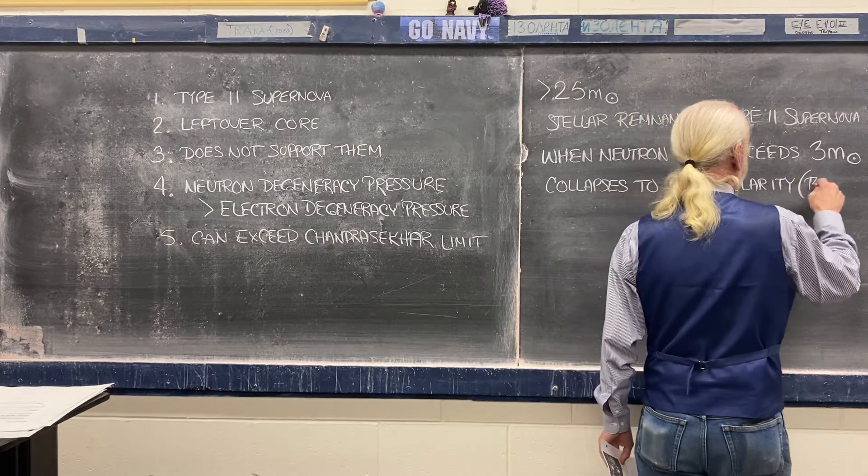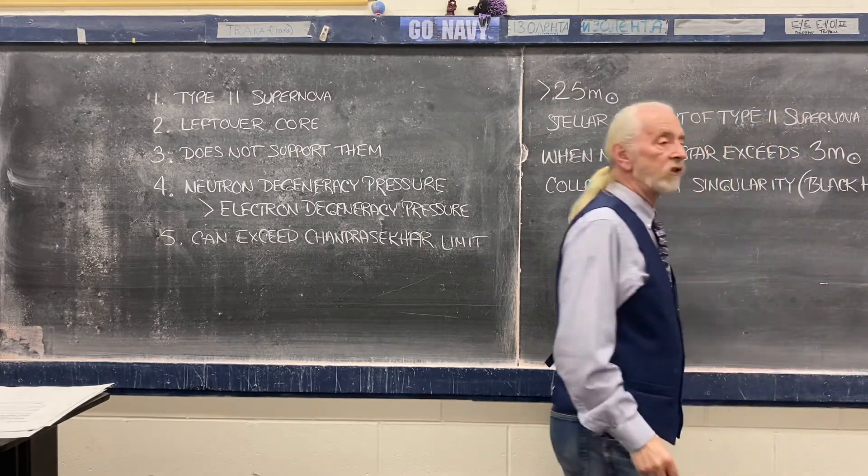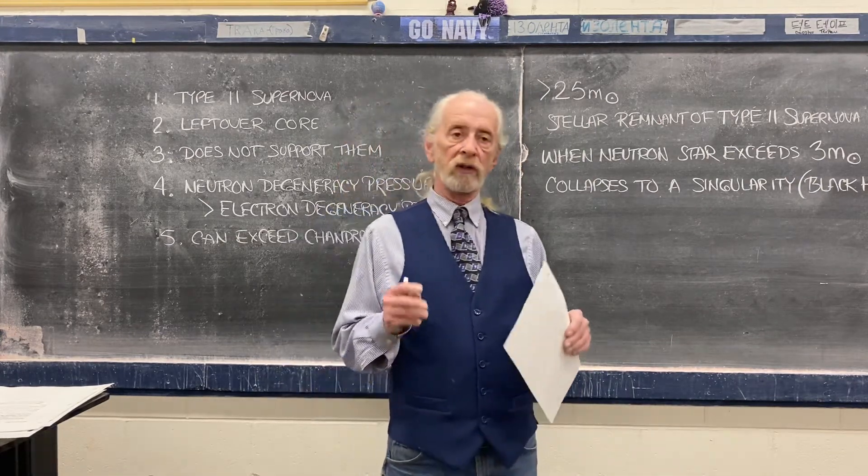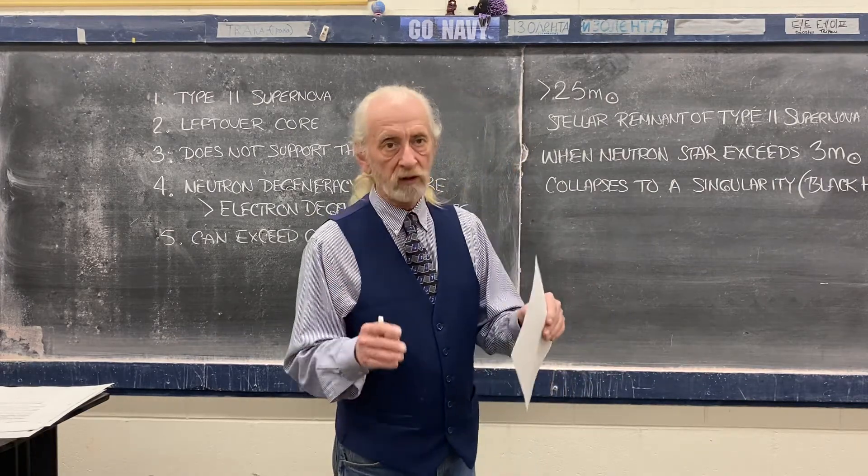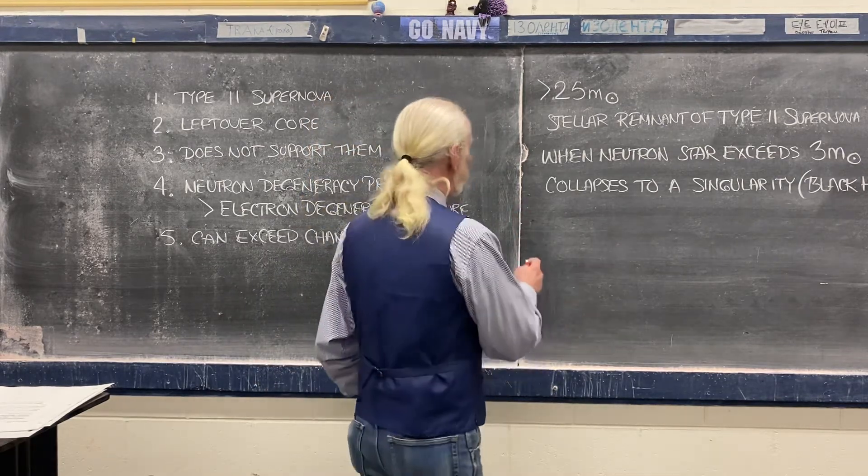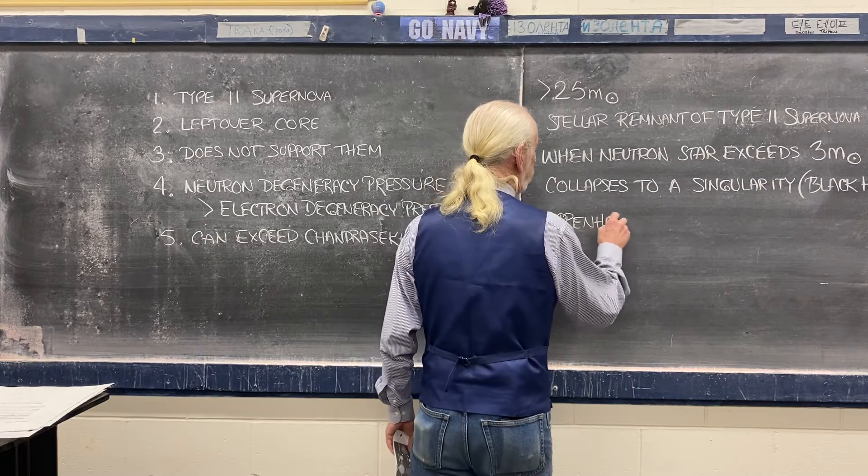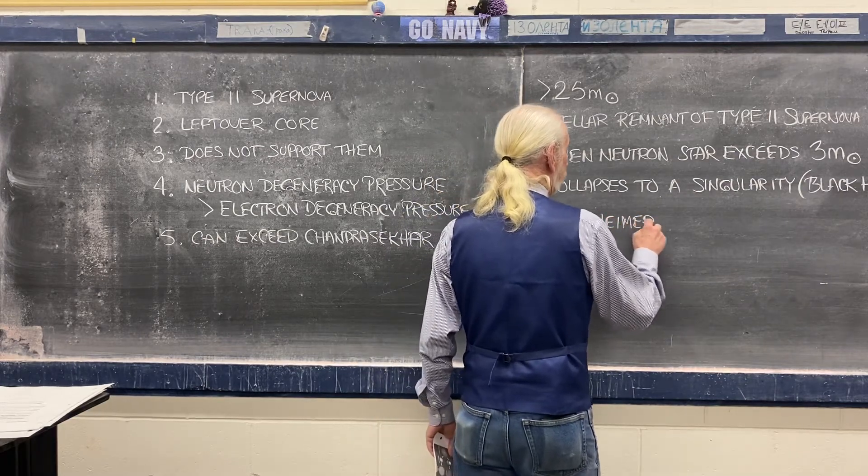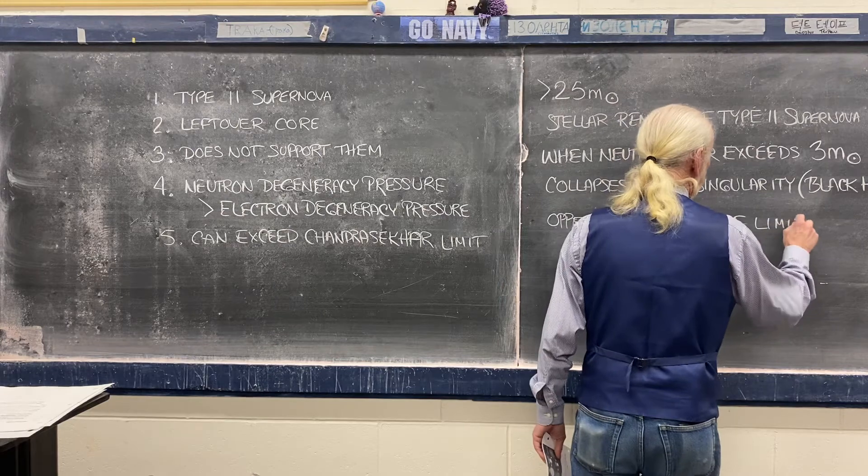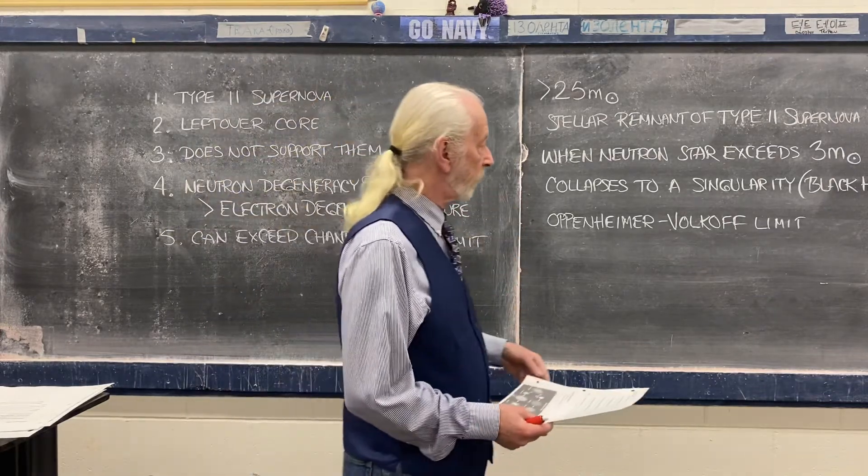Or, in other words, a black hole. Specifically, this is a stellar black hole. All right, and this limit... Now, we had the Chandrasekhar limit, which is the limit of electron degeneracy pressure. But now there's a limit to neutron degeneracy pressure. And that is the Oppenheimer-Volkoff limit. That is the mass limit of a neutron star. Three solar masses. The Oppenheimer-Volkoff limit. Three solar masses.